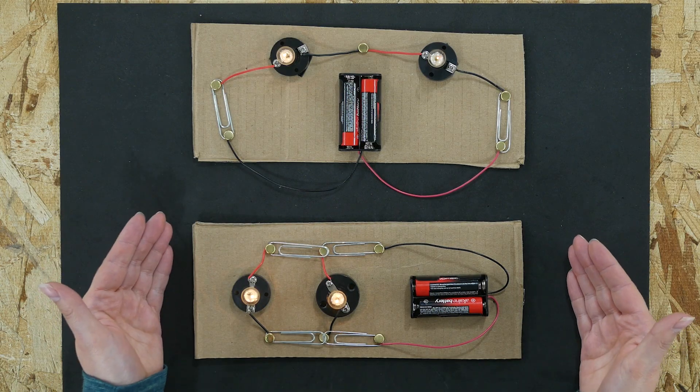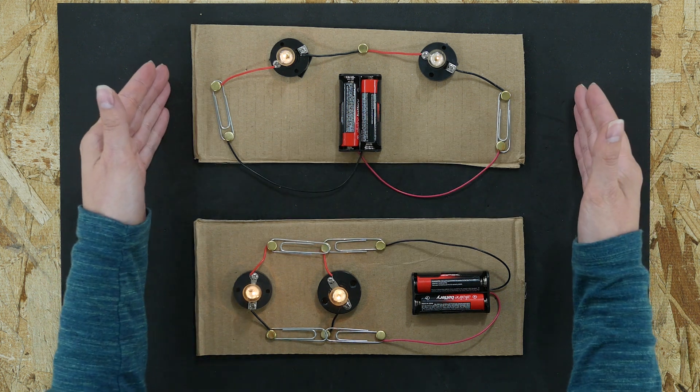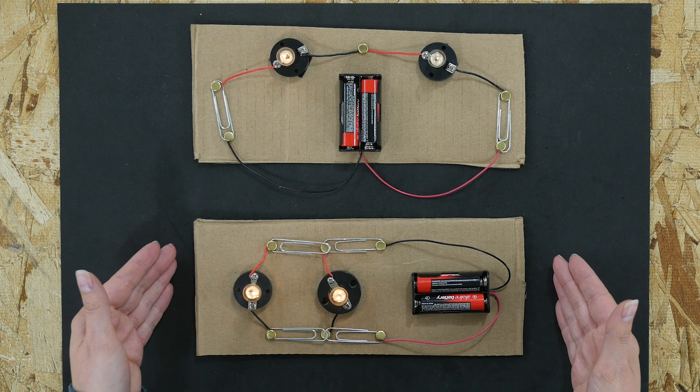In this circuit each light bulb has its own path or circuit for electricity to flow. Here the light bulbs share the voltage. Here the light bulbs do not share the voltage.